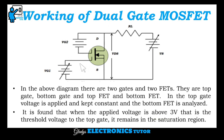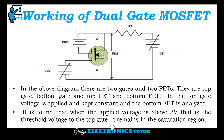This is the working of dual gate MOSFET. In the diagram there are two gates and two FETs — a top gate and bottom gate, and a top FET and bottom FET. The top gate voltage is applied and kept constant, while the voltage in the bottom FET is varied and analyzed. It is found that when the applied voltage is above 3 volts — the threshold voltage — the top gate remains in the saturation region.